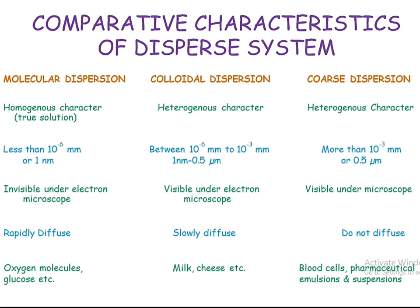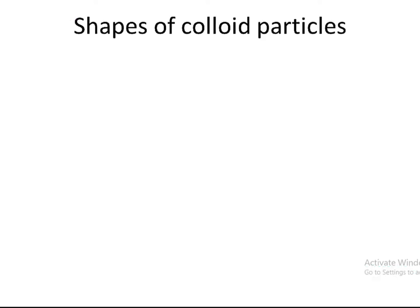A few examples of these dispersion systems: molecular dispersions include oxygen molecules and glucose. In colloidal dispersion, milk and cheese are very good examples. For coarse dispersion, blood cells and pharmaceutical suspensions — which are easily separable and visible under a microscope — are common examples.